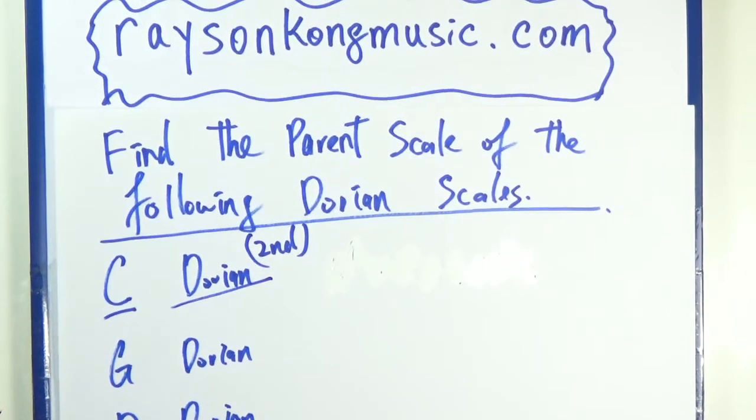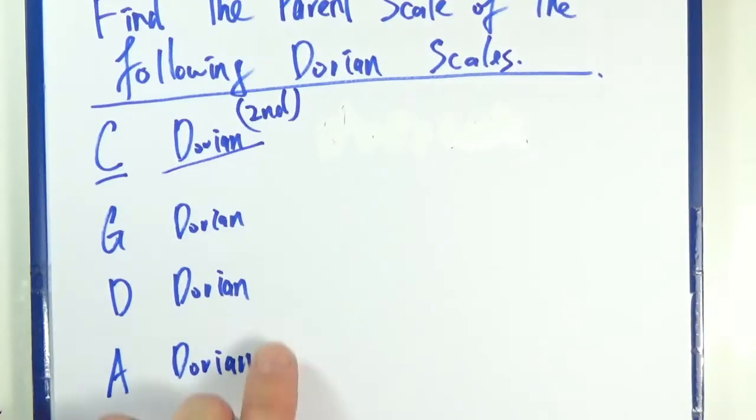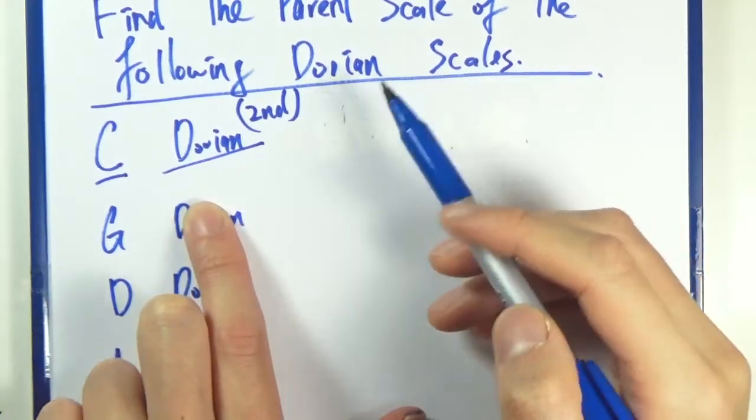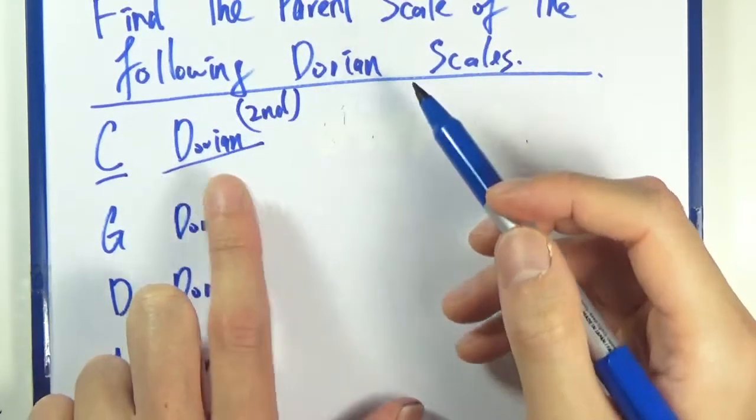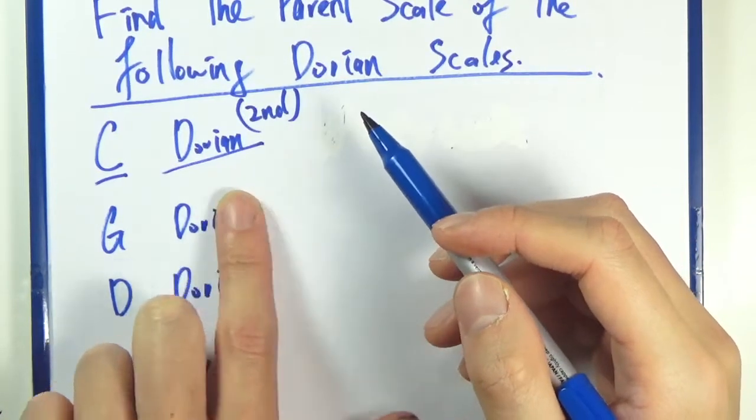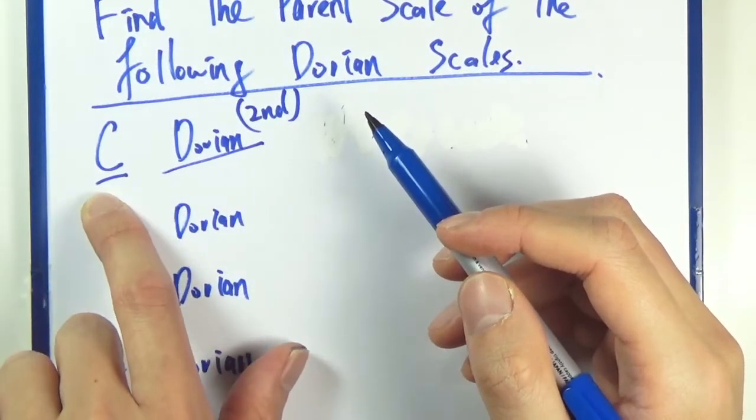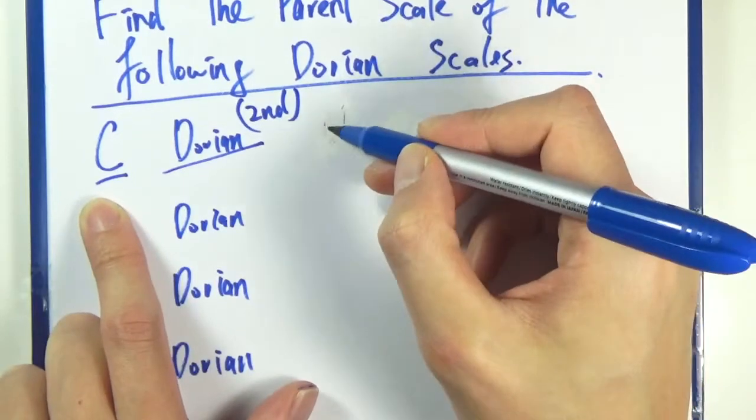Hello everyone, we'll work out some exercises again. We're going to find the parent scale of the following Dorian scales. C Dorian - remember, Dorian is the second mode, so if you start on C, then you go down a whole step, so B flat.